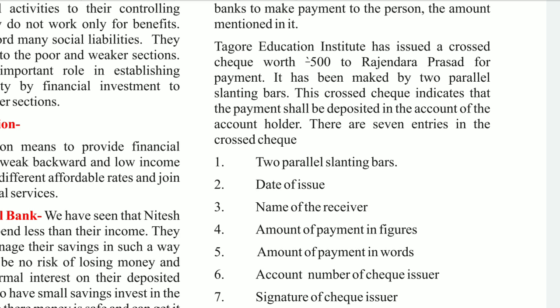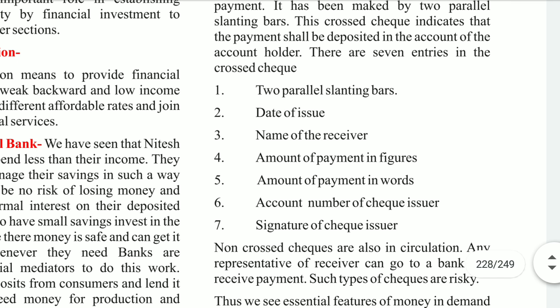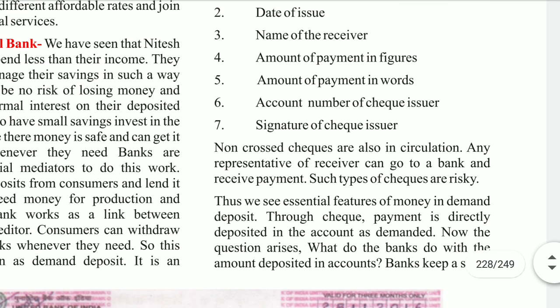The crossing of the cheque indicates that the payment shall be deposited into the account of the account holder. There are several entries in a crossed cheque: two parallel slanting bars, date of issue, name of the receiver, amount of payment in figures and words, account number, and signature.